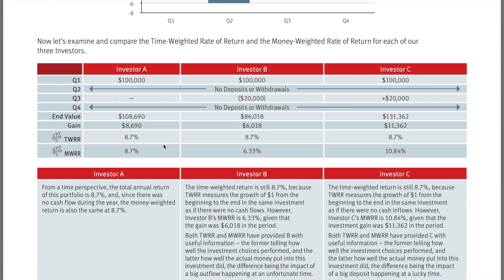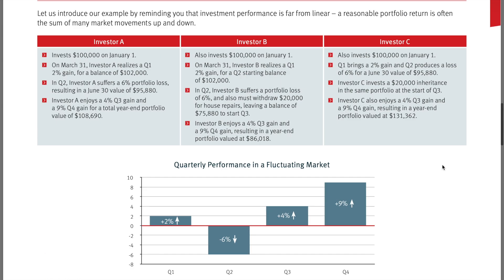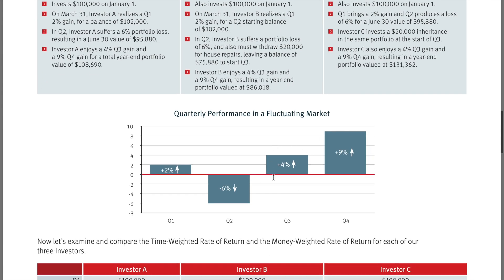The time weighted rate of return is 8.7% across all three investors — the fund performance was exactly the same for all of them. However, the money weighted rate of return differs: Investor A's MWRR is 8.7% because they did nothing, so it aligns with their TWRR. Investor B's MWRR is 6.33% due to the withdrawal they made and the timing of it. Investor C's MWRR is 10.84% because they introduced new funds right as the portfolio started to increase.